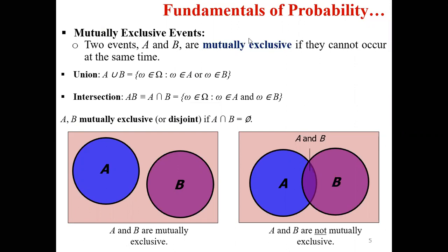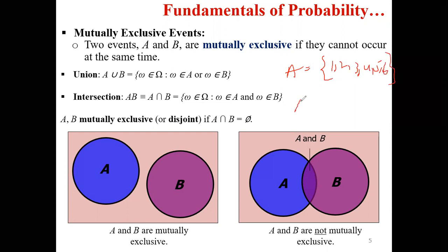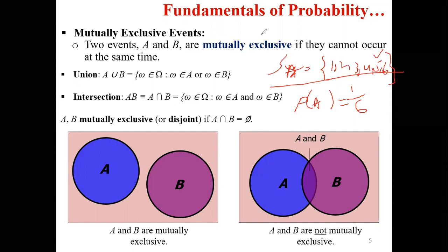The most important part is how we calculate event probability. For a die, the sample space is 1, 2, 3, 4, 5, 6. If we have two events, let's say we pick up for example event A from that sample space.